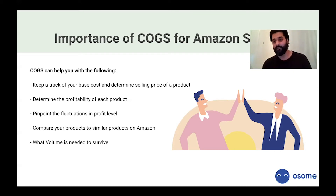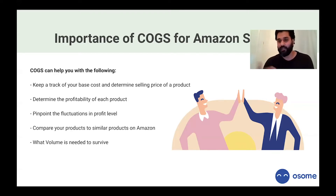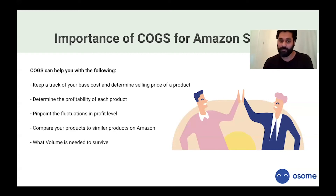Cost of goods sold also helps you compare all the products in your line and with other Amazon sellers. Using the gross profit margin, you can see the profitability percentage of your product versus others. Popularity and market research matter, but financially, how well your product is actually doing is what cost of goods sold is about.